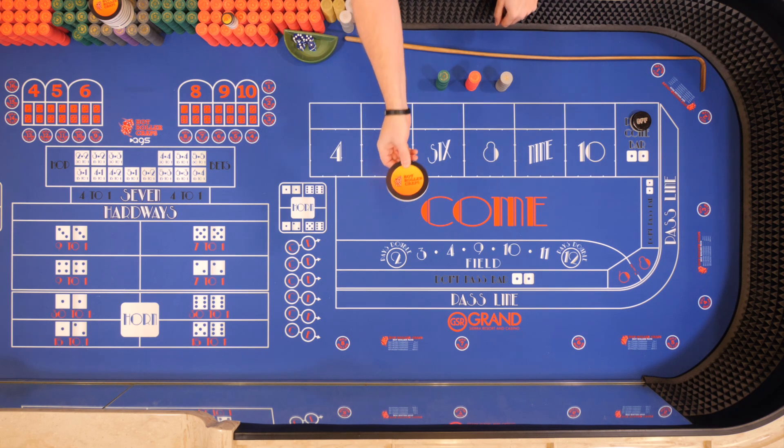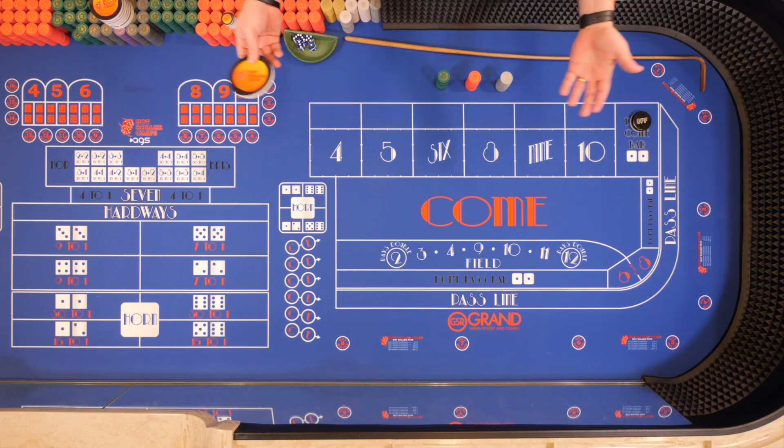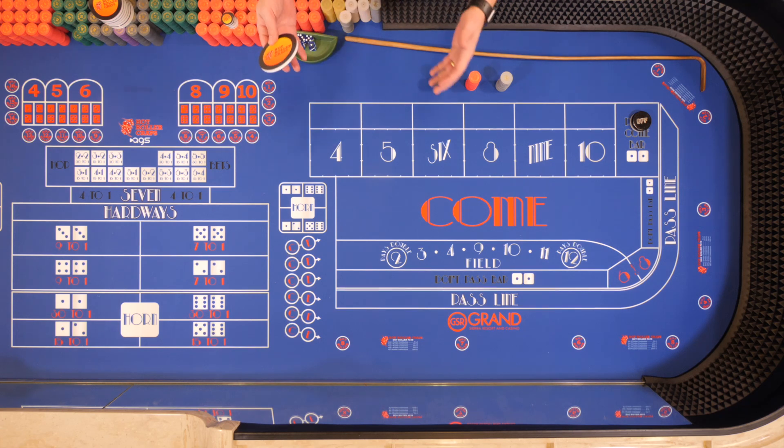Today we're taking a look at the Hot Roller Craps Side Bet. Now this is a pretty unique side bet. It's new to at least here in Reno. I'm not sure anywhere else in the country that has it. If you're familiar with the Fire Bet and the Repeater Bet, this is almost kind of like a combination of both.